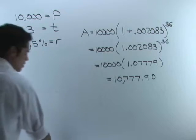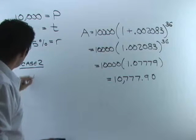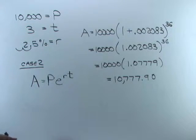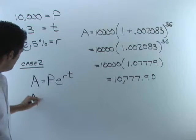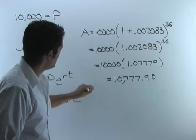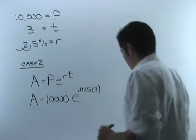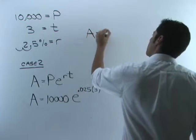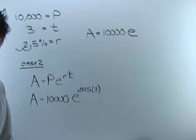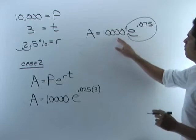Now let's look at case two: interest compounded continuously. Continuous compounding means you use the different formula, and notice there's no n in it — you don't use n for continuously compounded interest. So A equals P times e raised to R times T. We know P is 10,000, R is 0.025, and T is 3.